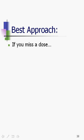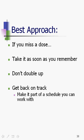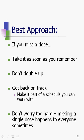So the best approach is: if someone misses a dose, take it as soon as you remember. Don't double up — get back on track. Make it part of a schedule you can work with. You can go right back to the 7am dosing the next day. All of these meds are built with a little bit of wiggle room in mind. Everybody misses a dose now and then. When we talk about HIV adherence, the expectation is that people take 95% of their doses correctly — and that is a tall order.